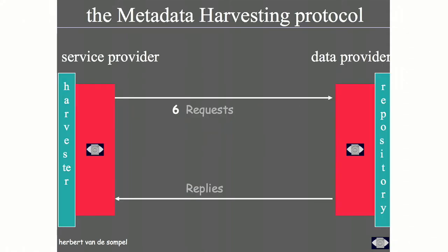We're really moving metadata around, not the real stuff, because that was expensive and sometimes just didn't exist. We had a very repository-centric viewpoint. We ended up with a graph where on the right-hand side we have data providers — the repositories — and on the left-hand side we have service providers that harvest them. We defined six protocol-specific verbs for how the service provider and data provider can synchronize and discover new or updated metadata.